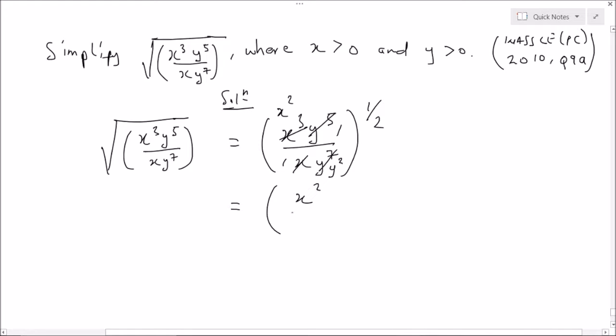x² over y² all to the exponent 1/2. So we simplify. We take note that this exponent 1/2 affects the numerator separately and it also affects the denominator separately.